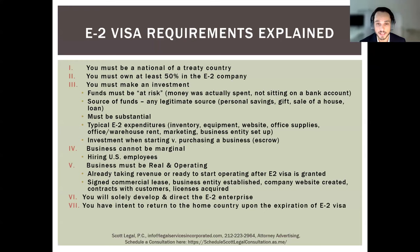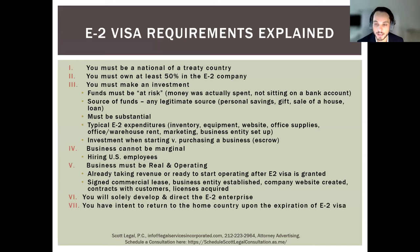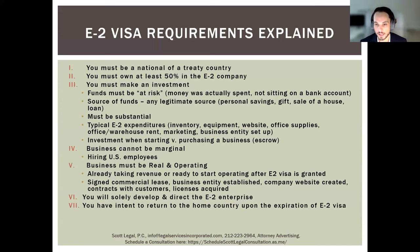The fifth requirement is that the business must be real and operating. What we mean by that is the business is either already doing business in the US or will be doing business in the US. We can show that by providing evidence that the E2 company is already taking revenue, has secured a lease, has established a business entity, has a company website up and running, has contracts lined up with prospective customers, or has already acquired required licenses to operate — such as from the FDA.